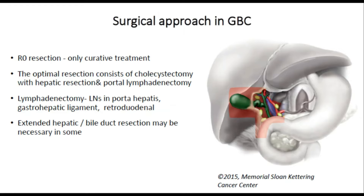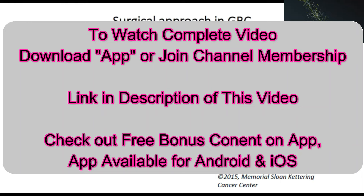In gallbladder cancer surgery, R0 resection is the only curative treatment available. The optimal resection consists of cholecystectomy with hepatic resection and portal lymphadenectomy. The lymphadenectomy should include lymph nodes in the hepatoduodenal ligament, gastrohepatic ligament, and retroduodenal lymph nodes. Extended hepatic and bile duct resection may be necessary in some cases. The first step in surgery for gallbladder cancer is aortocaval lymph node dissection, and they are subjected to frozen section. If they are metastatic, the surgery is abandoned as the disease is M1 — metastatic.